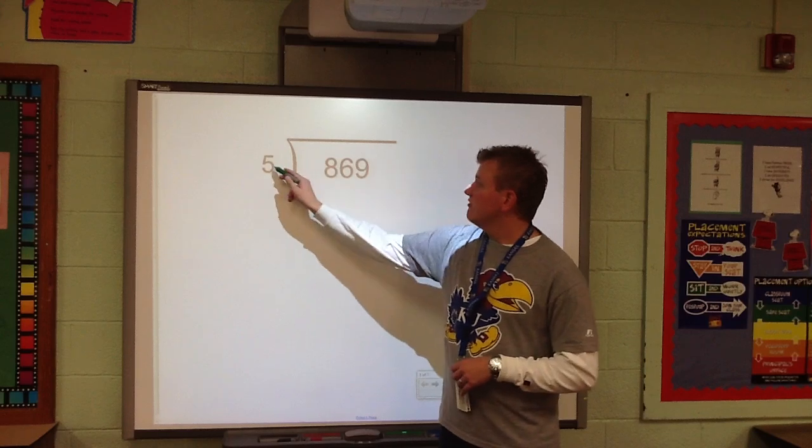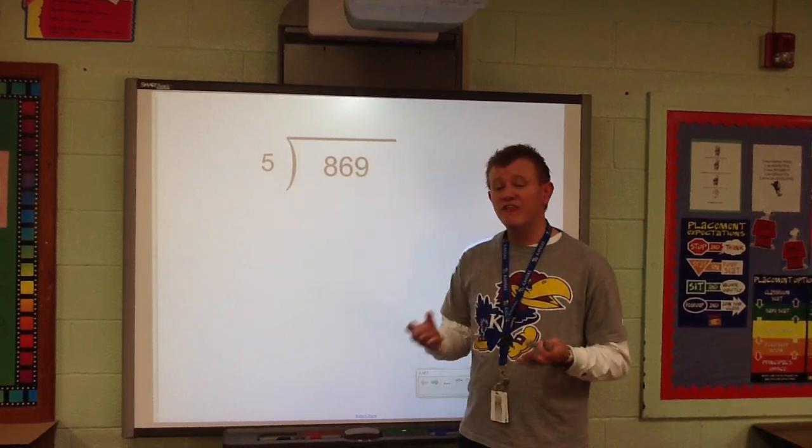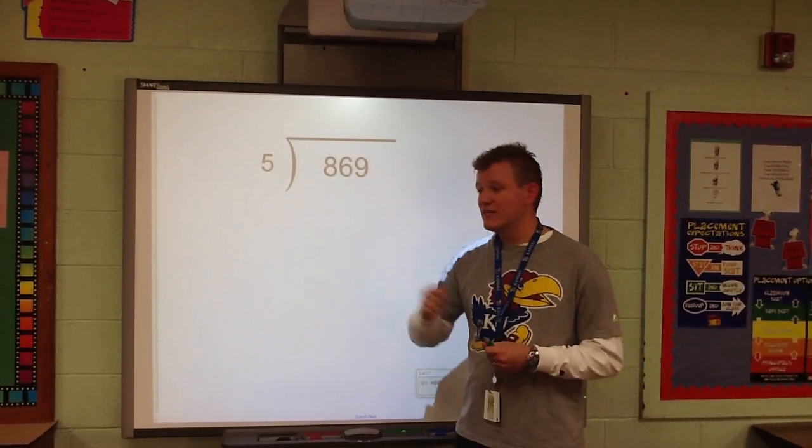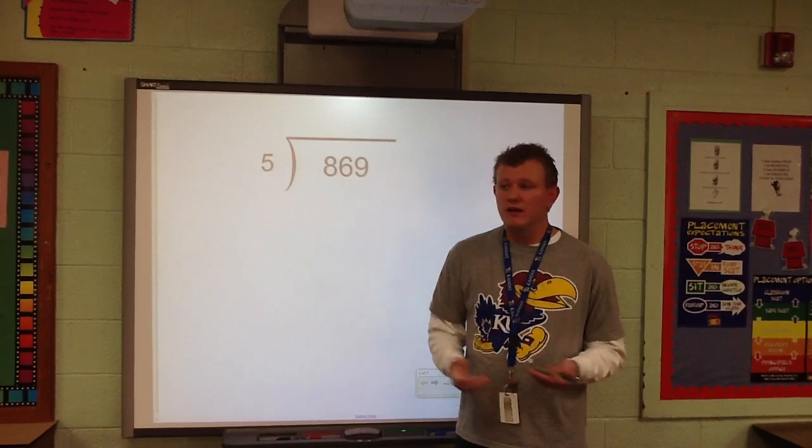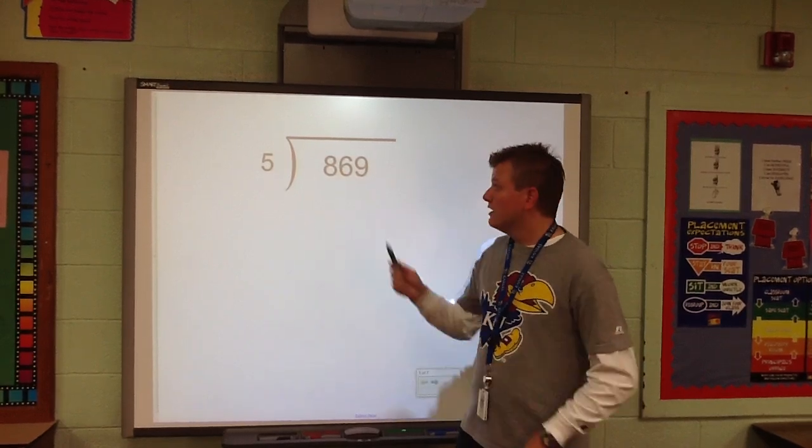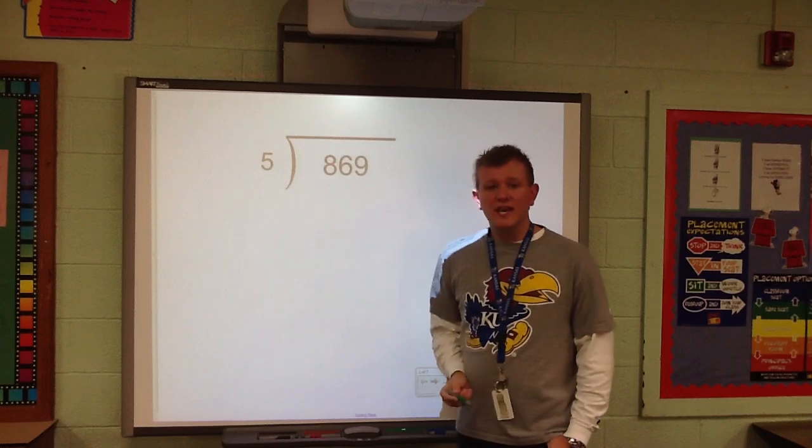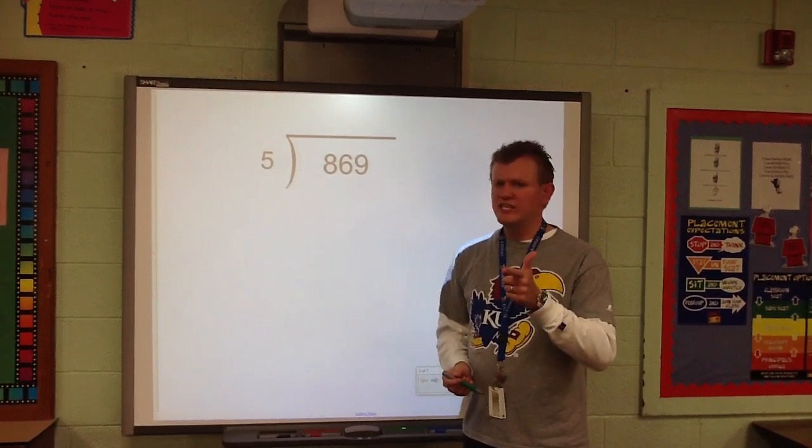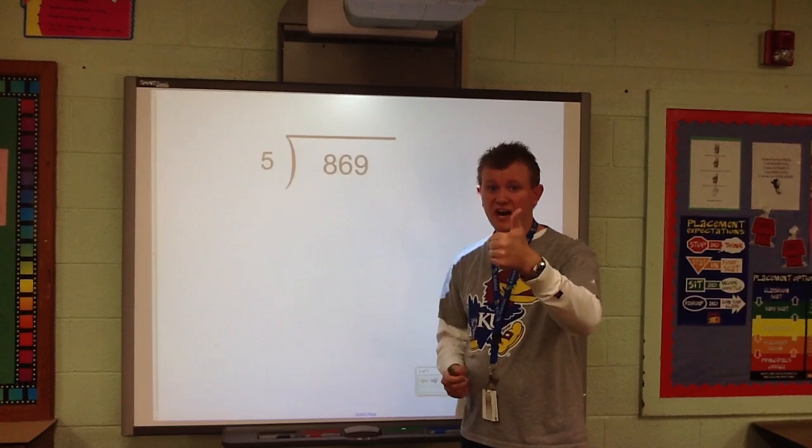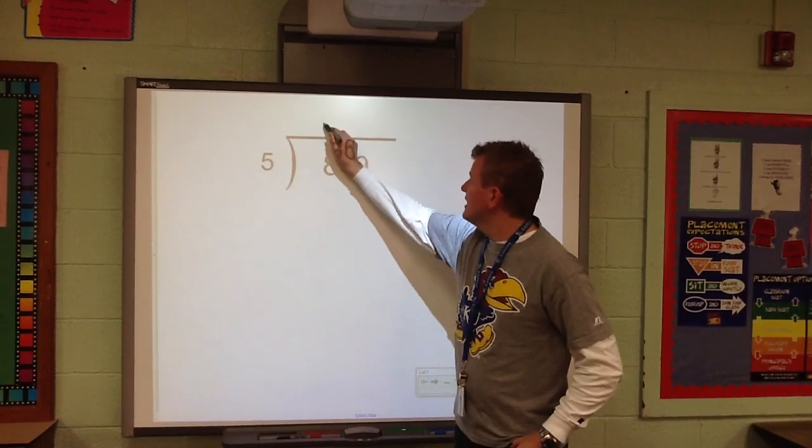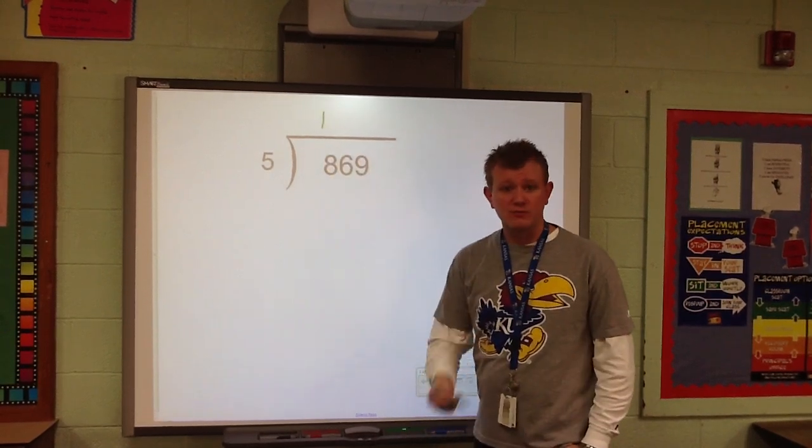First things first, I'm going to see if 5 goes into 8. Well, if I have 5 friends and I've got 8 butterfingers, can I give a butterfinger to each friend? Of course I can. In fact, I'll have some left over. So, 5 does go into 8. If I skip count, 5, 10. Well, 10's too big. 10 is higher than 8. So, just 5. It goes in one time. I'm putting the 1 up here. That's part of the answer. It's part of the quotient.